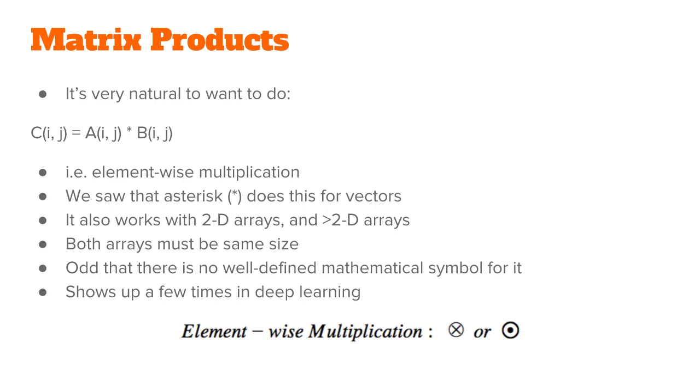This might strike you as a bit odd, because in other languages, the asterisk actually does mean real matrix multiplication. So you just have to remember that in NumPy, the asterisk means element-by-element multiplication, and the dot means matrix multiplication.